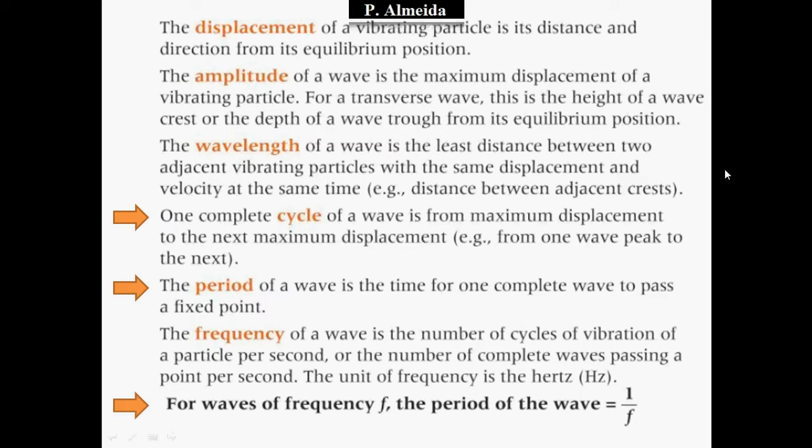Remember, displacement is a vector, so it's not just the distance you are from equilibrium — it also includes direction, whether you're up or down. The amplitude of a wave is the maximum displacement of a vibrating particle. Particles move further from and closer to equilibrium; when at the furthest point, either up or down, that's the amplitude.